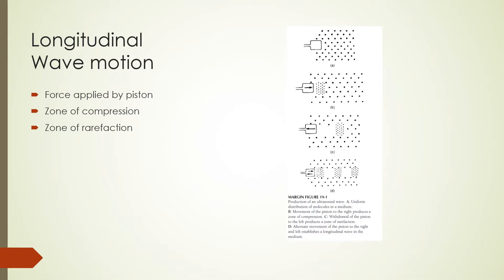The region of increased pressure begins to move away from the piston and through the medium. When the piston is withdrawn, as in C, a region of reduced pressure is created called a zone of rarefaction. When the piston is displaced to the right again, a new high pressure compression zone is created as in figure D. In this way, the zones establish a wave disturbance in the medium. This disturbance is termed a longitudinal wave because the motion of the molecules in the medium is parallel to the direction of wave propagation.